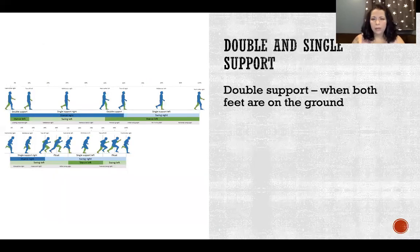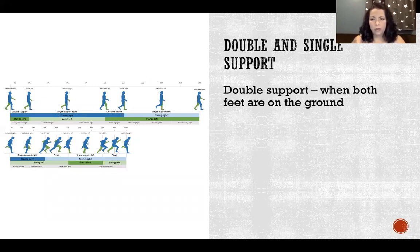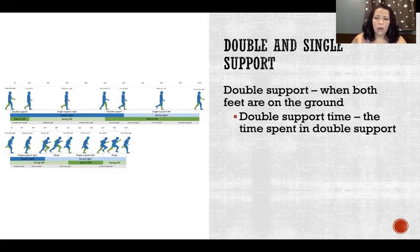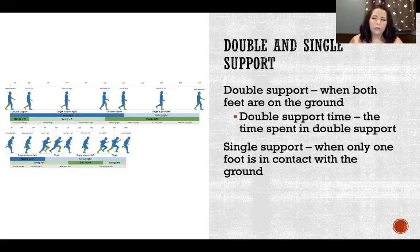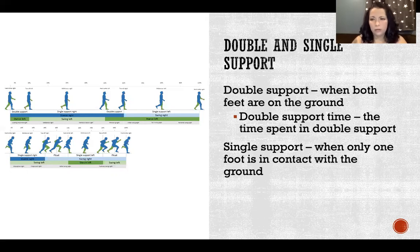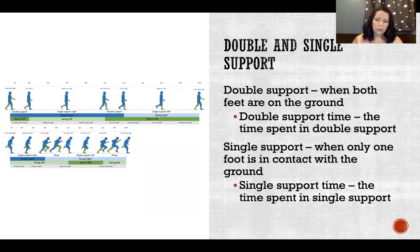Double support happens when both feet are on the ground. Twice during a walking gait cycle we have a period where both feet are on the ground at the same time. Double support time is the amount of time spent in double support. Single support is when only one foot is in contact with the ground and the other is in swing — one leg is supporting the body while the other swings. Single support time is the amount of time spent in single support.